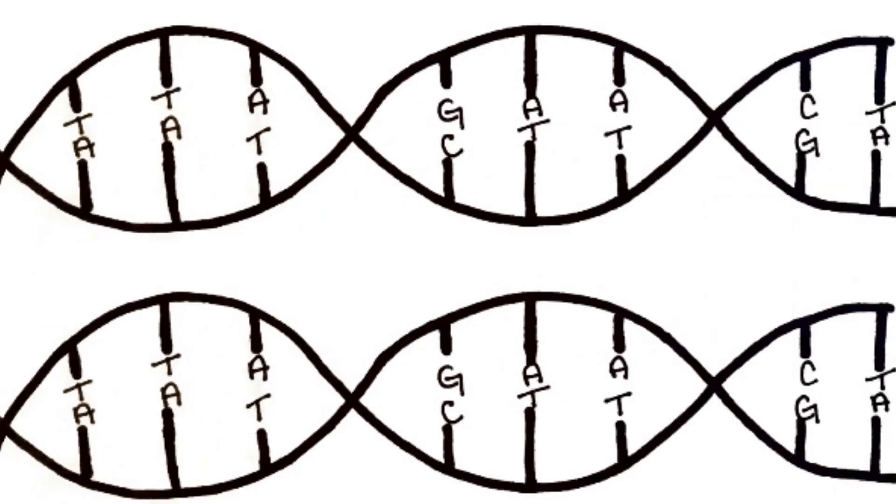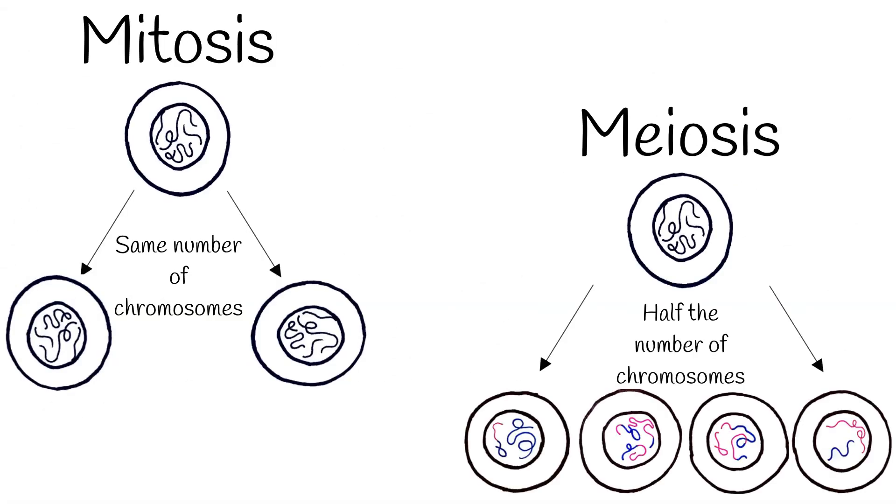We now have two identical double helix DNA molecules. Each copy has one original and one new strand. This cell can now continue to mitosis or meiosis.